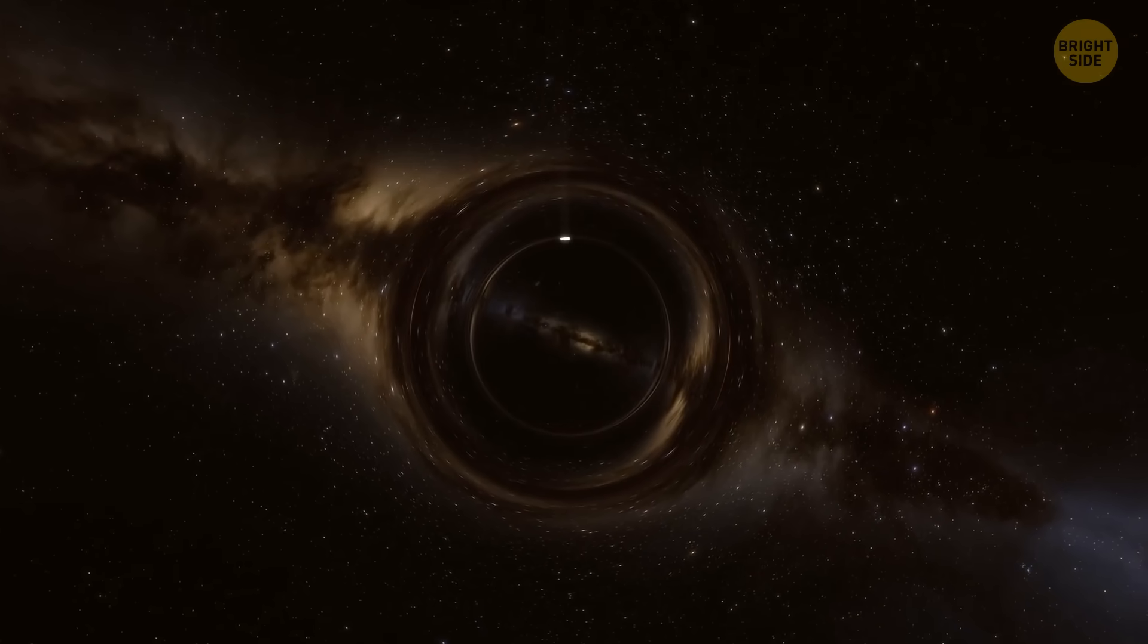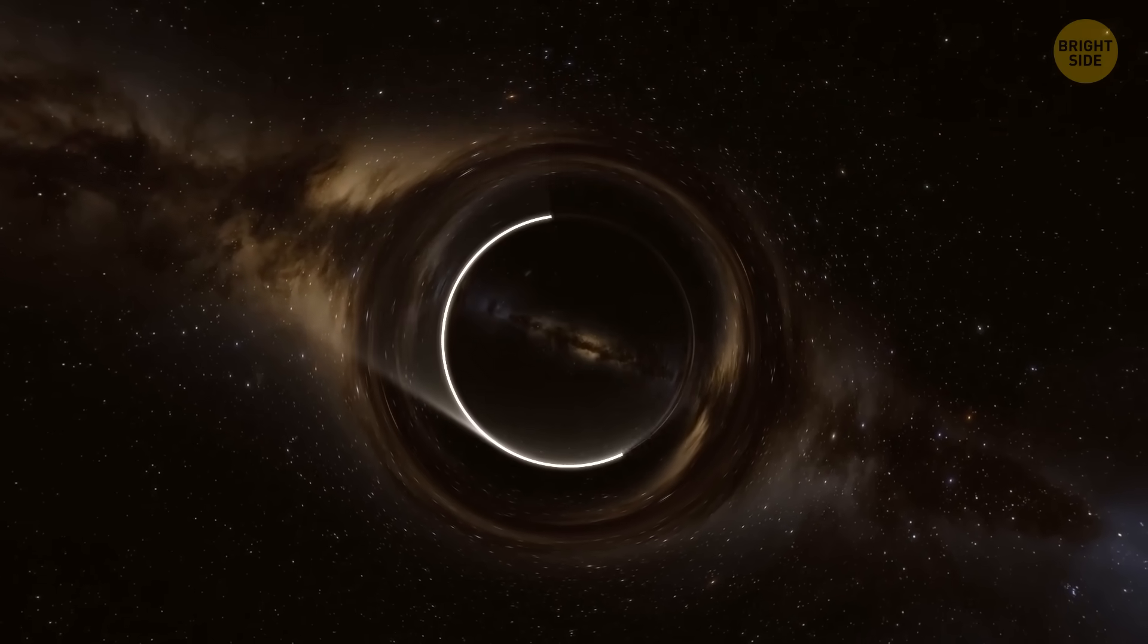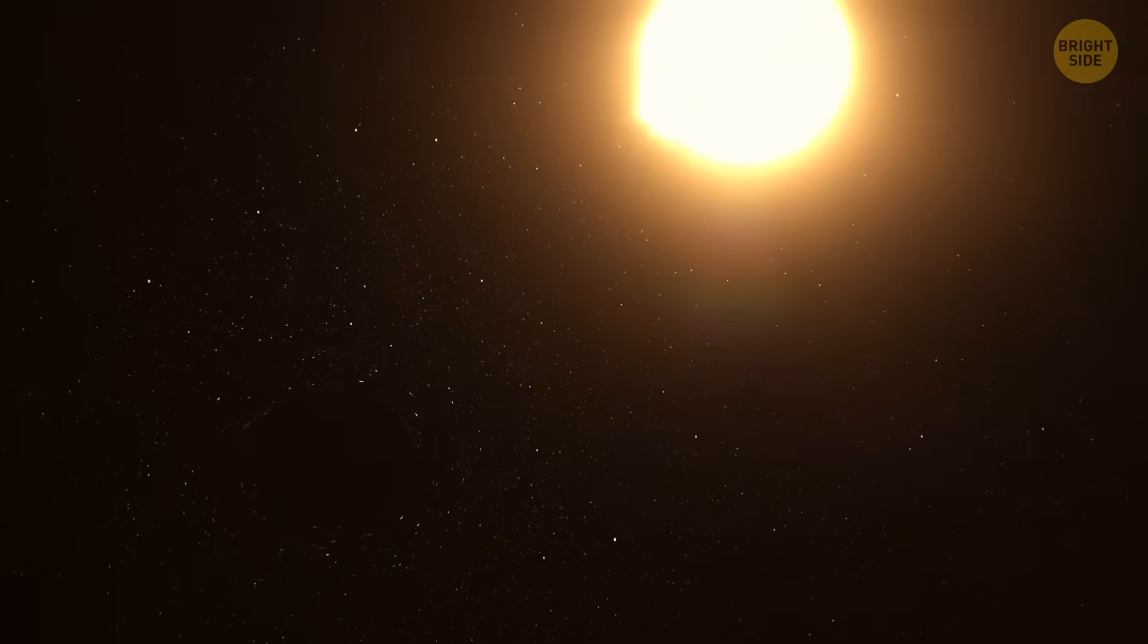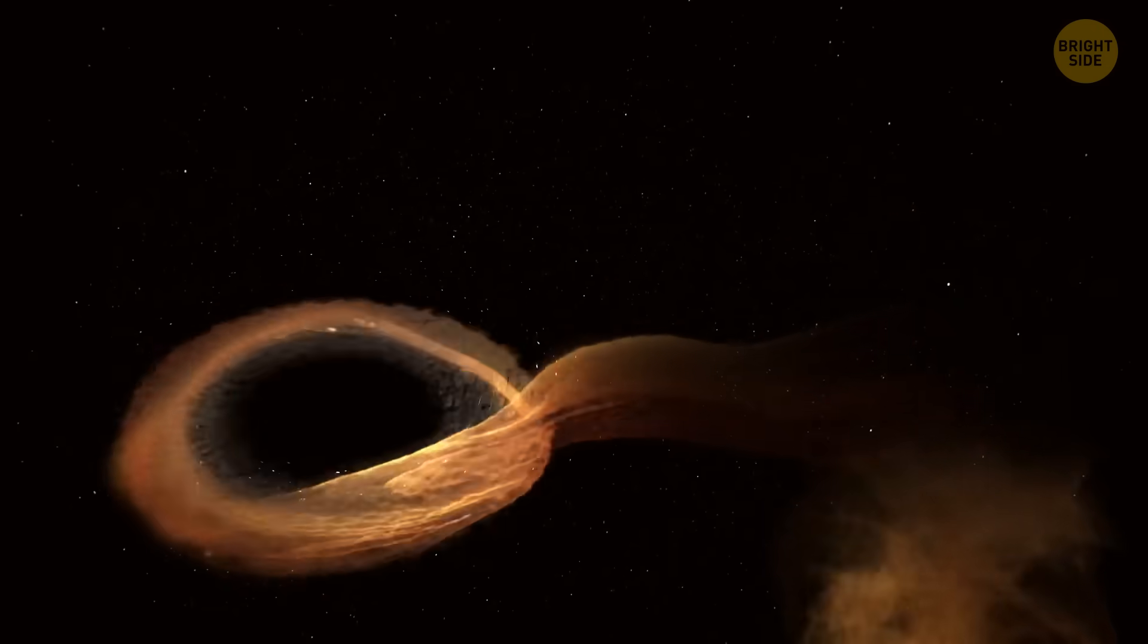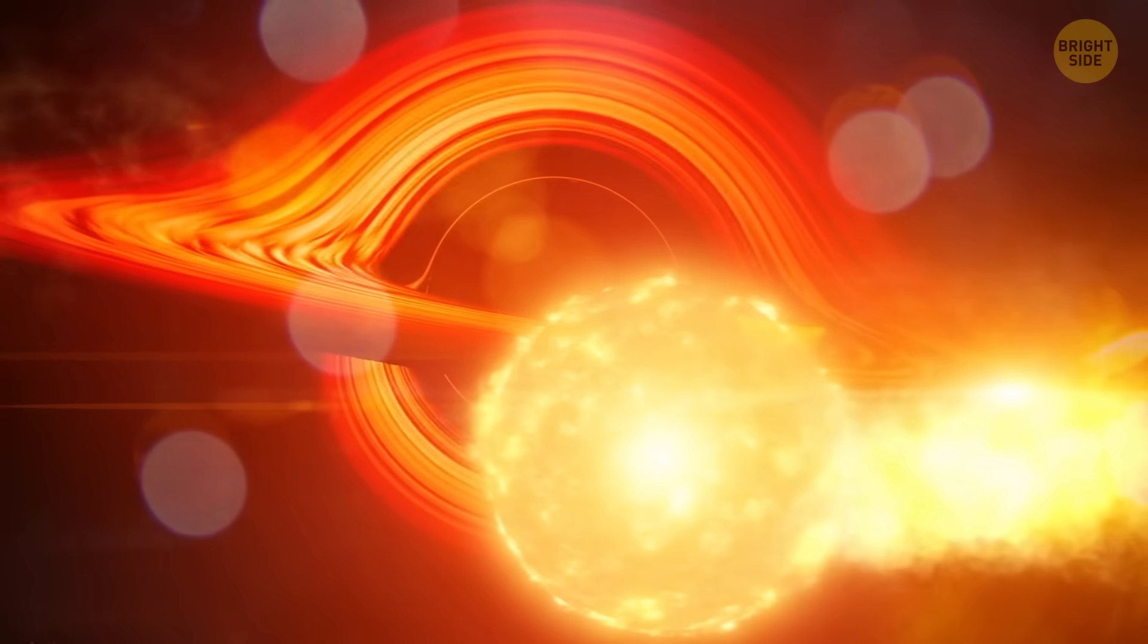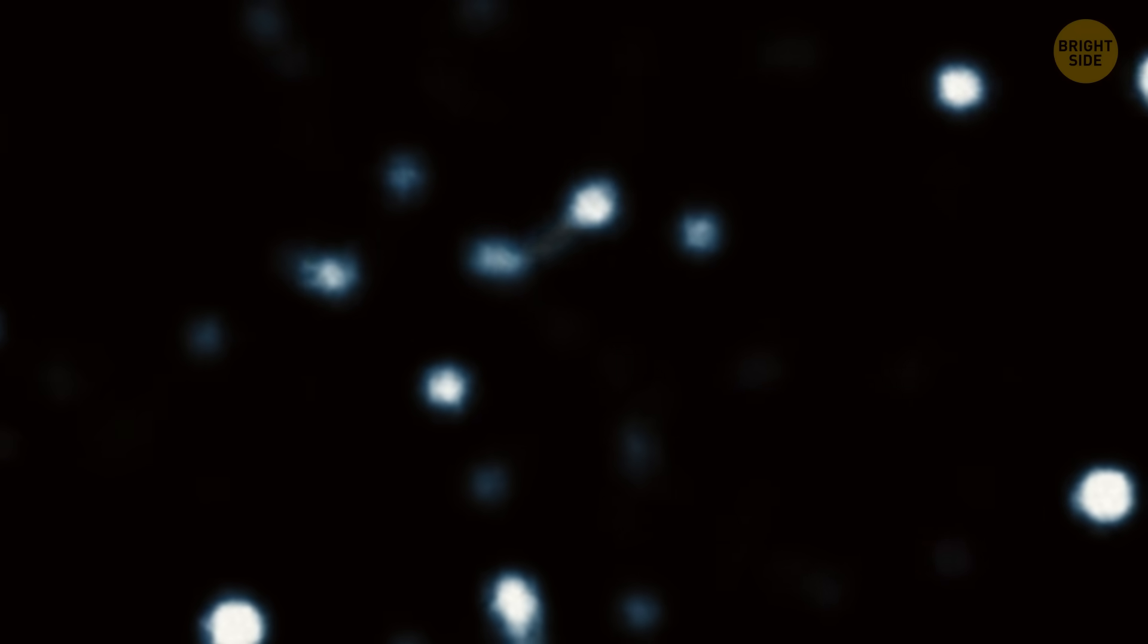Usually, black holes are super hard to find because they don't give off any light. You can only detect them when they're eating nearby matter. That makes them glow brightly. Or when they have a companion star. In this case, it moves in a strange way, which gives away the presence of a black hole.